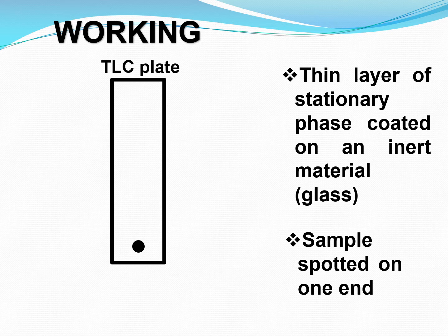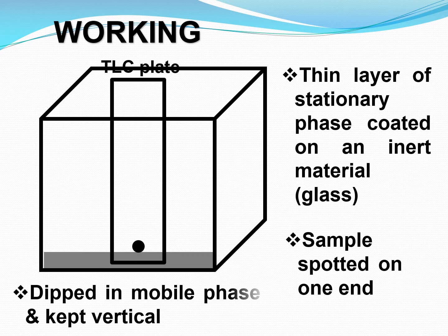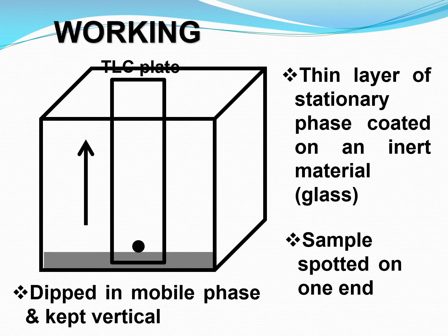The first step is to coat a thin layer of stationary phase on an inert material like glass. The second step is to spot the sample on one end. The third step is to add the mobile phase: the TLC plate is dipped in the mobile phase and kept vertical. The mobile phase will rise upwards and separate the components due to differential migration.